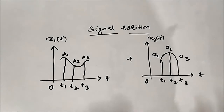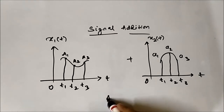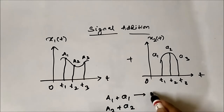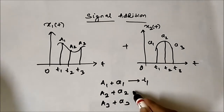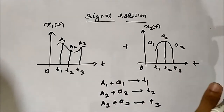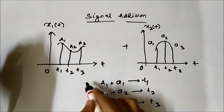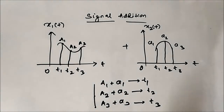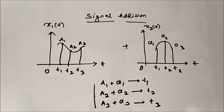We add the amplitude values at each time instant, then we join the points. So we will add a1+a1, a2+a2, a3+a3 at time instants t1, t2, and t3 respectively. The values we get are joined together, and the shape we get is the resultant signal. This is the basic operation and now we will discuss it with the help of some examples.